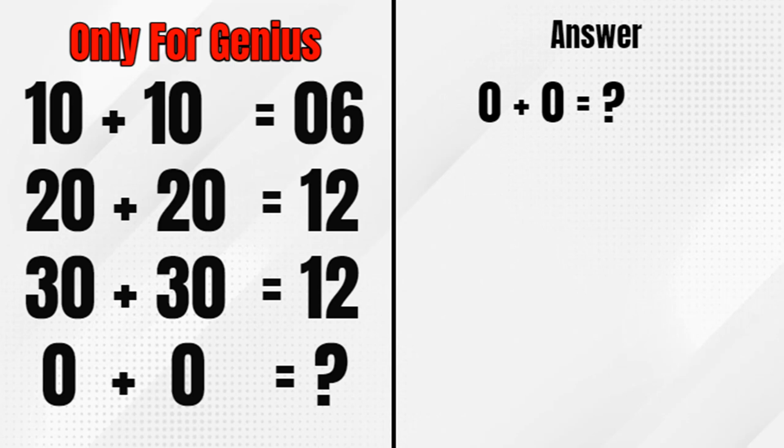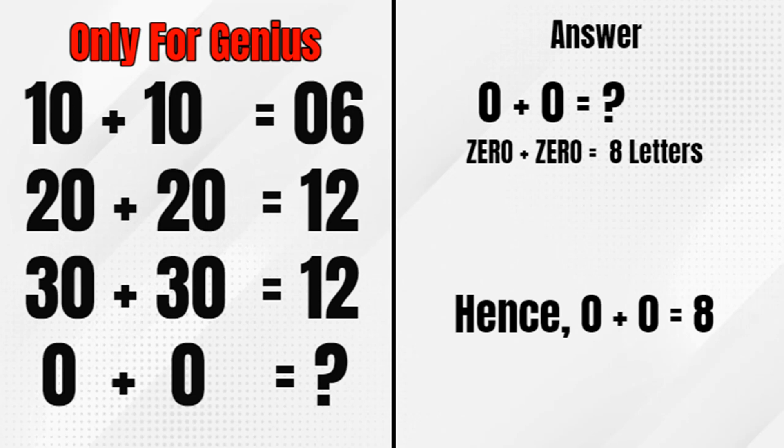0 plus 0 is equal to? So 0 can be written down as ZERO. So that is four letters. 4 plus 4 is 8 letters. Hence, 0 plus 0 is 8.